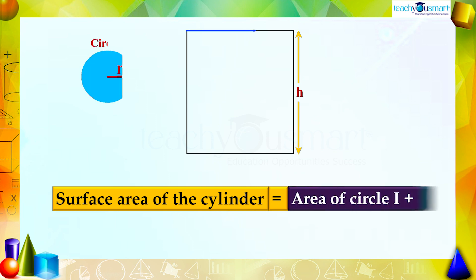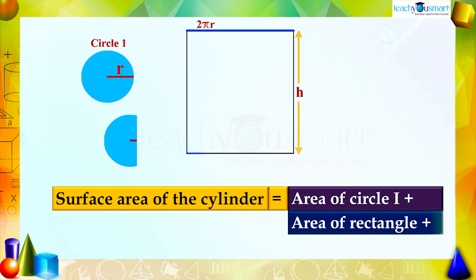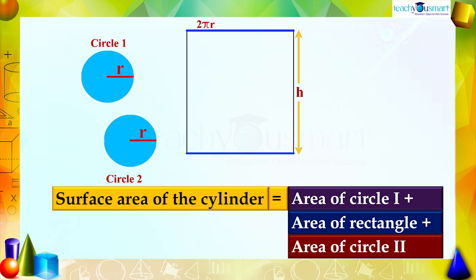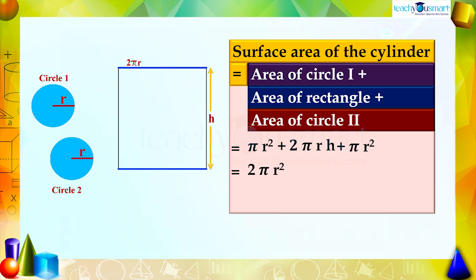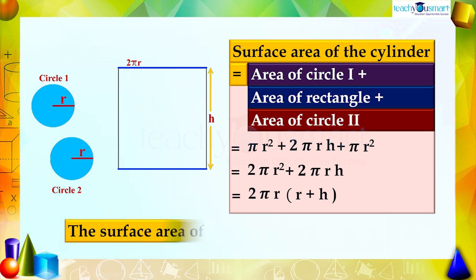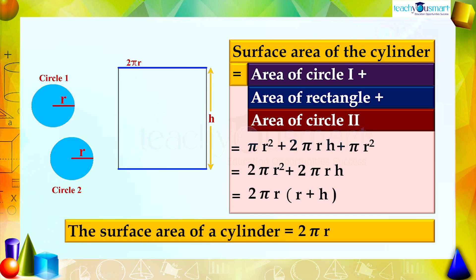So the surface area of the cylinder equals area of circle one plus area of rectangle plus area of circle two, which gives 2πr² plus 2πrh, equals 2πr multiplied by (r + h). That is, the surface area of a cylinder equals 2πr(r + h).